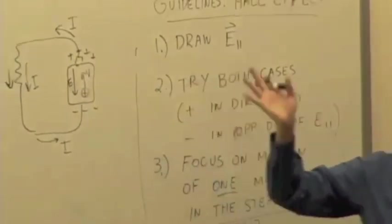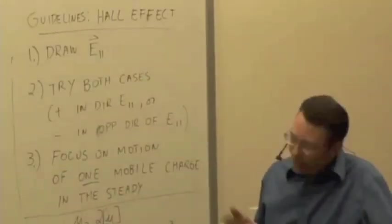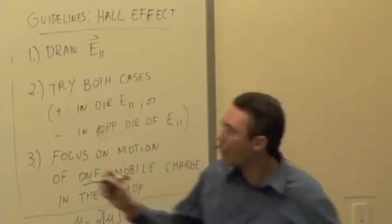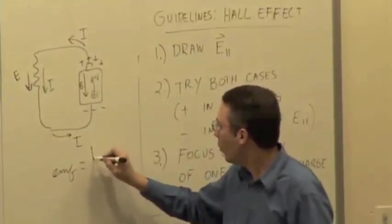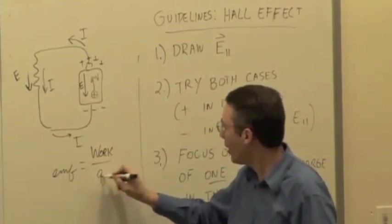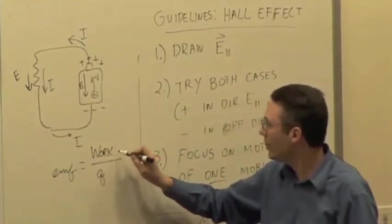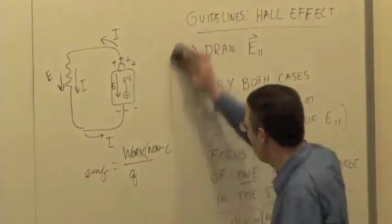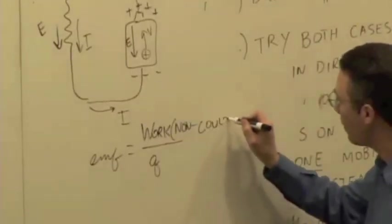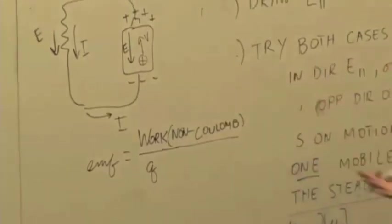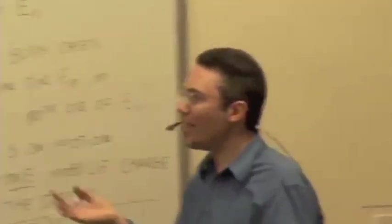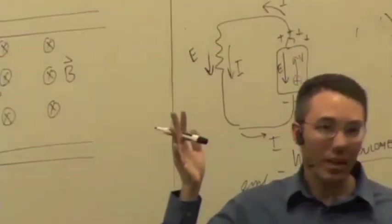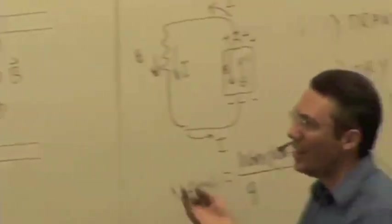In the battery, the electric field points from the positive to the negative terminal inside. If we imagine the charge carriers are positive, a positive charge moves in the direction of the electric field through the external circuit, but moves upward inside the bar in the opposite direction of the electric field. What's supplying the force causing charges to move opposite to the electric field inside the battery? That's called the EMF — the work done per unit charge by a non-Coulomb force. In the battery, that's a chemical reaction. In this case, what's driving the charges the opposite direction? The magnetic force.